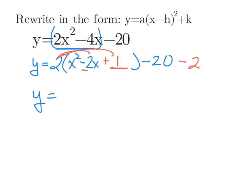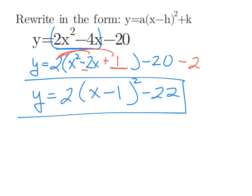But now, we can write it in the right form. I have that 2 out in front. Everything in parentheses is a perfect square. It's x minus 1 squared. And then the constant term that's outside of those parentheses, negative 20 minus 2, that ends up being the k that we want. And that's how we use completing the square to get it in the right form.